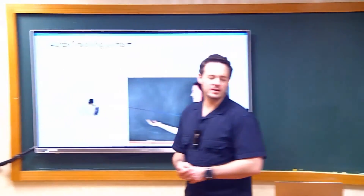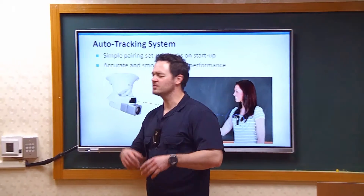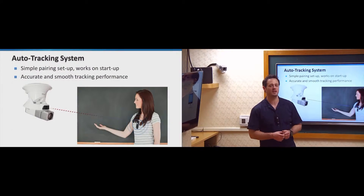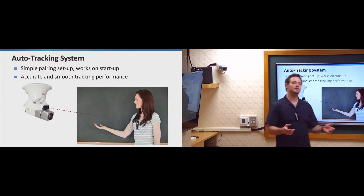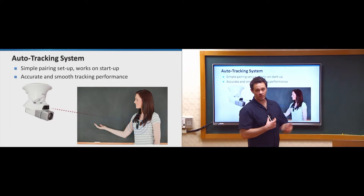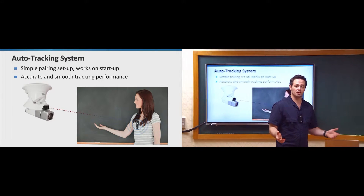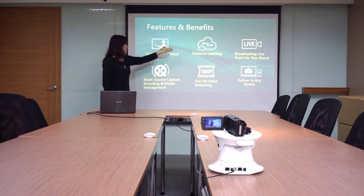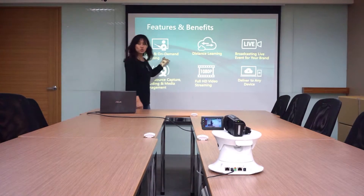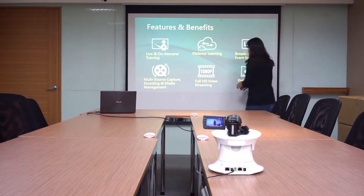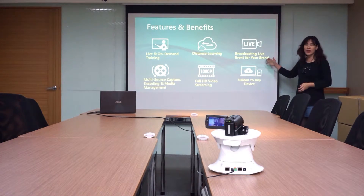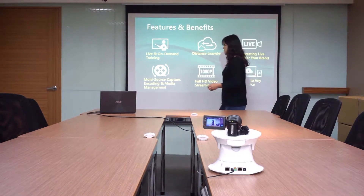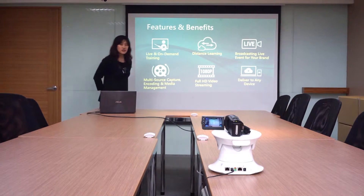It's worth talking about the auto-tracking system. This is a very special system — one of the reasons is because it's so easy to set up. All you need to do is pair the positioner with the mount, and you're good to go automatically on startup. The tracking performance is accurate and very smooth, and it can even deal with a moving close-up. This performance is right on par with what you would get from a professional cameraman.